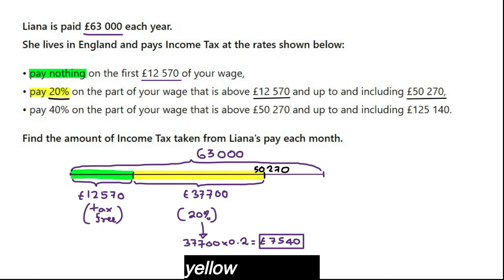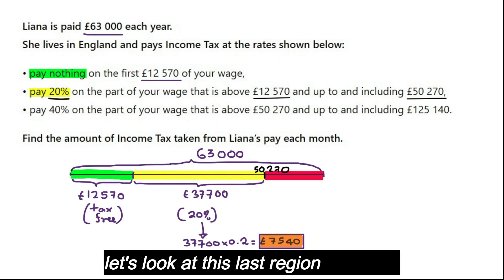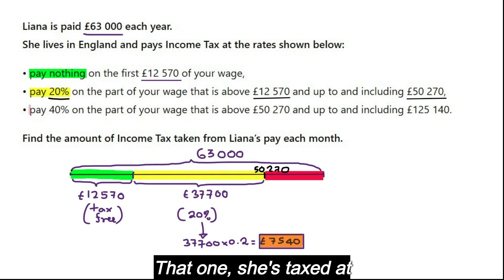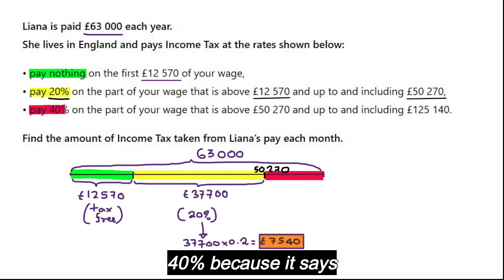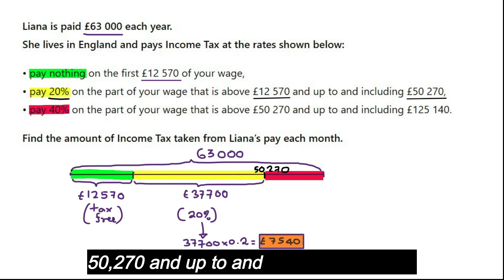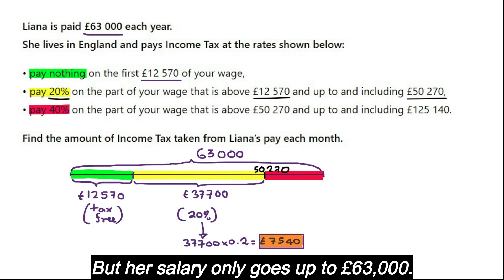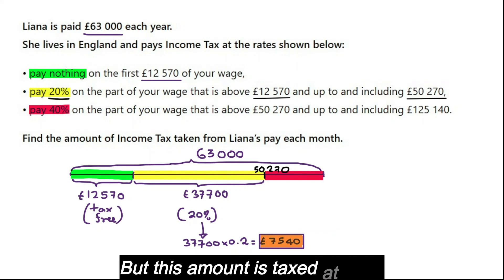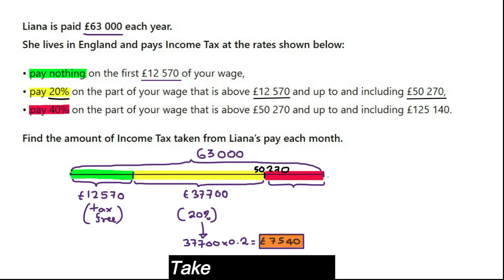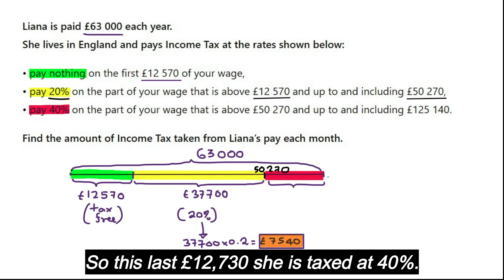Now let's look at this last region highlighted in red. She is taxed at 40% because it says: pay 40% on the part of your wage that is above £50,270 and up to and including £125,000. But her salary only goes up to £63,000, so only that portion above £50,270 is taxed at 40%.